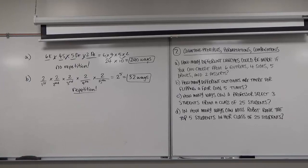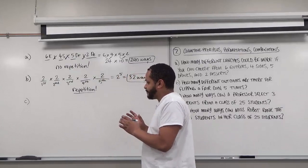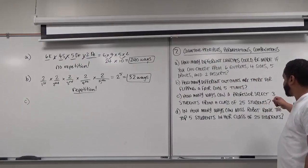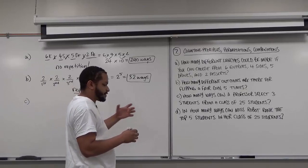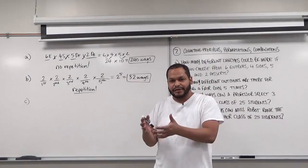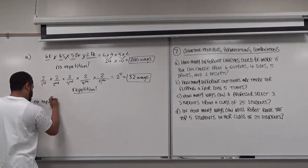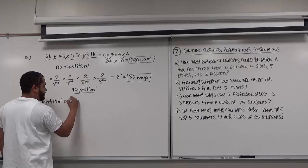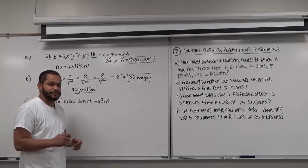Moving on to Part C: how many ways can a professor select 3 students from a class of 25? There's no repetition because you're selecting students out of a class, and for every selection you make there's going to be one less student. We also have to consider whether order matters. If we're selecting 3 students from a class of 25, it doesn't matter how those students are selected — it's like picking a committee. Order doesn't matter. So we know two things: no repetition and order doesn't matter, which means we can use a combination.